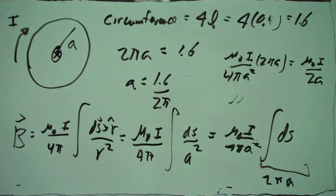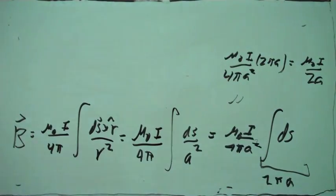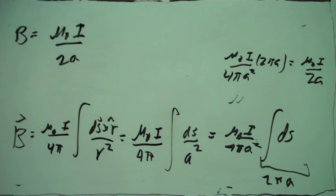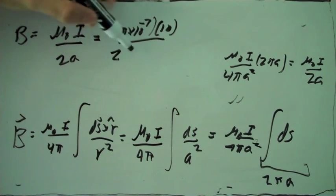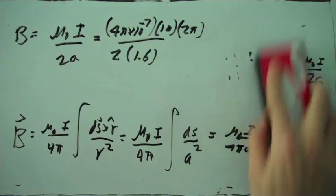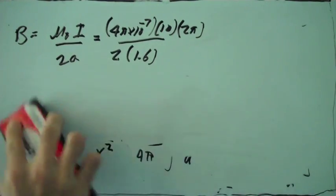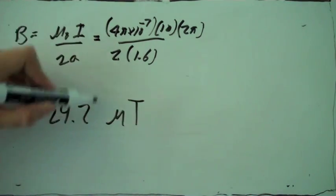That's the magnetic field at the center of the circular loop — mu-naught I divided by 2A. Now we plug in the numbers: mu-naught, current equals 10 A, and A equals 1.6 divided by 2 pi. Evaluating this gives us the magnetic field at the center of the circle in micro-teslas.